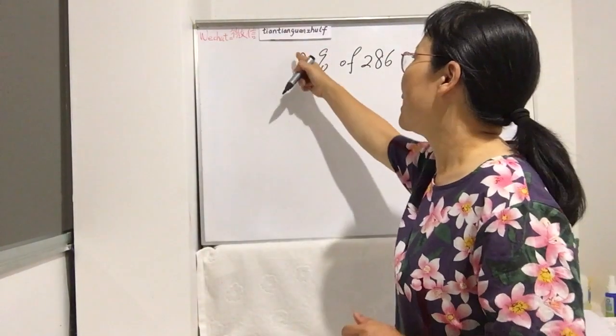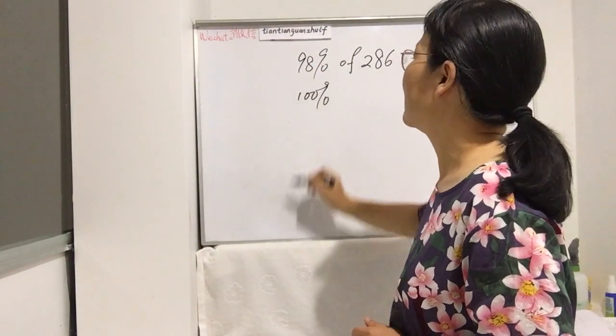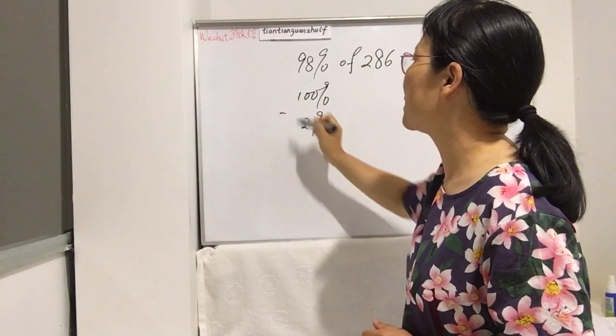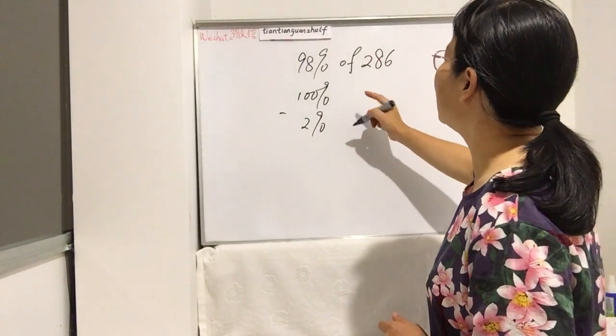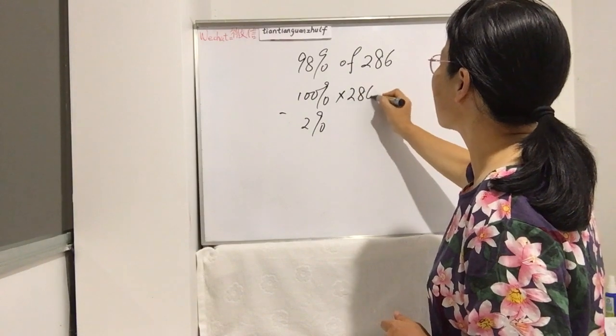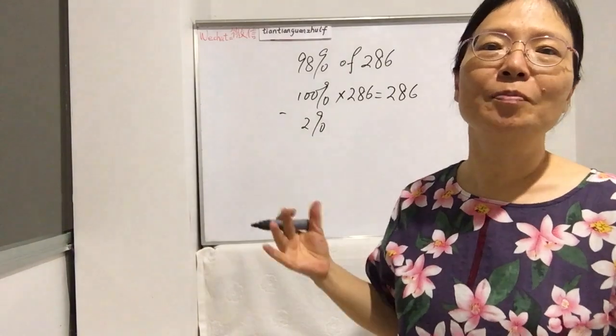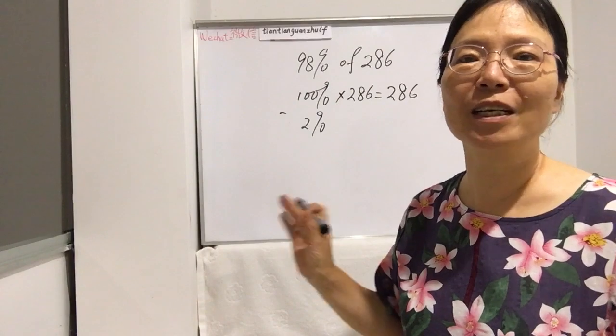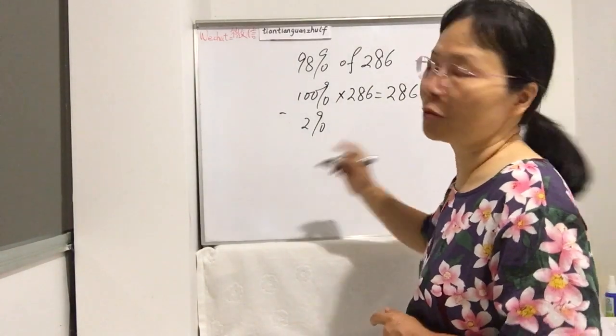Use the same trick. 98%, we can think about 100% minus 2%, so 100% minus 2% is 98%. Let's work out this one. 100% is 286, same answer, 286. Any number times 100% keeps its original number. Just remember this rule and it's very easy.